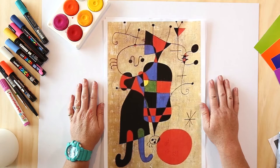This activity we are going to look at the Miro symbols. Miro used symbols in his work all the time to create these little characters.